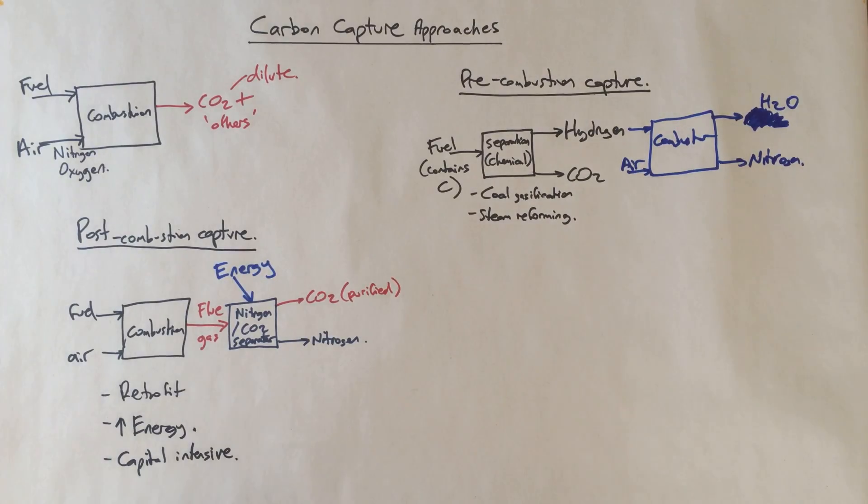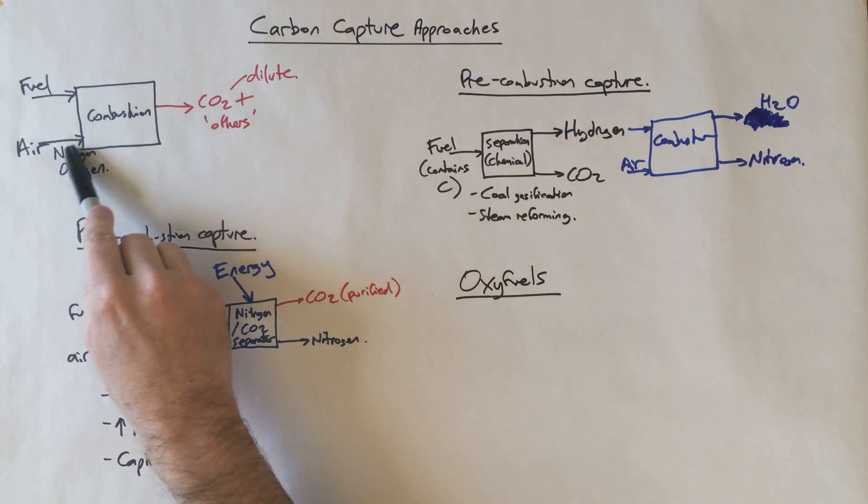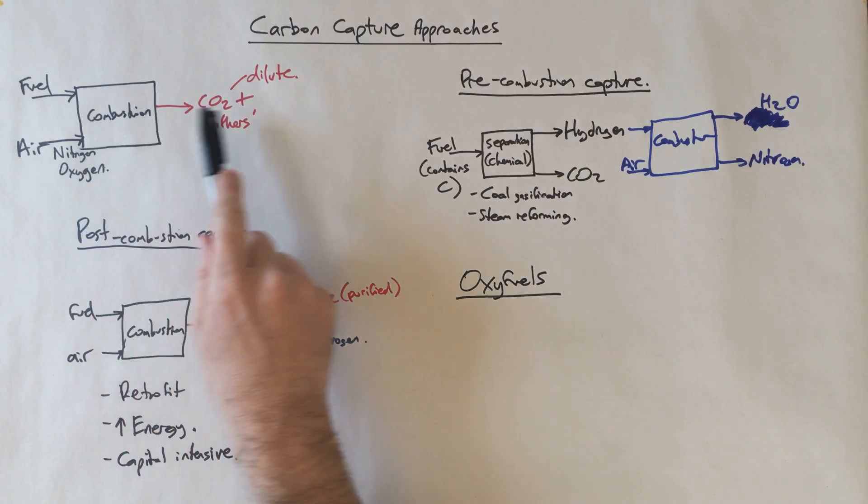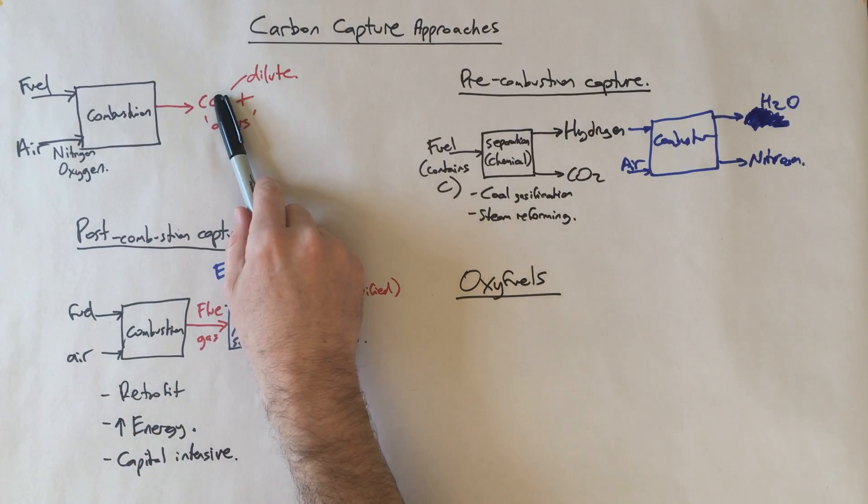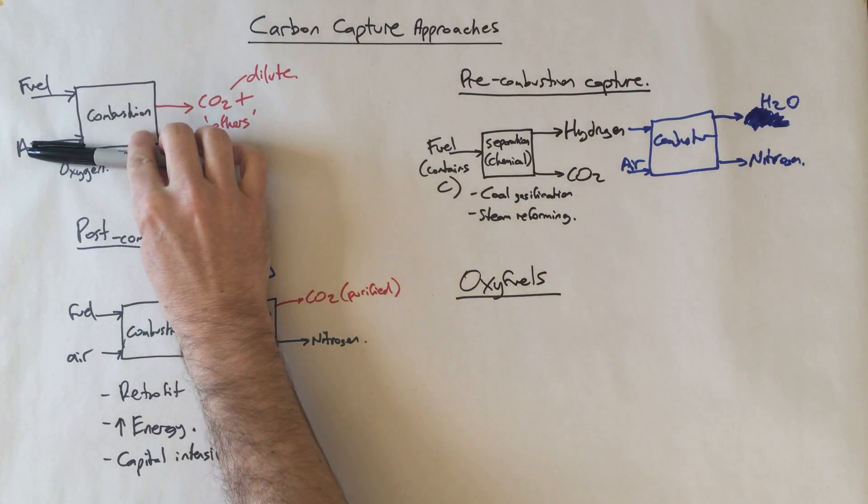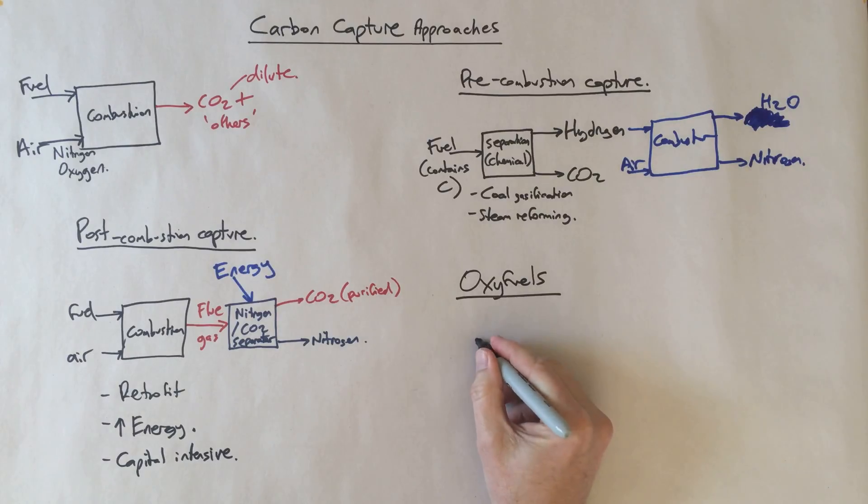The third technology is something that maybe not something that many people would think of upfront - it's known as oxyfuels. What does oxyfuels do? Oxyfuels is you go back to the start and you say, we've got this fundamental problem - we've got a fuel and it's mixing with all of this nitrogen in the process of getting the oxygen that you need. And therefore, we end up with a dilute CO2 stream. Some people have thought, what if we just remove the nitrogen and we burn the fuel in purified oxygen? And that's essentially what they do.